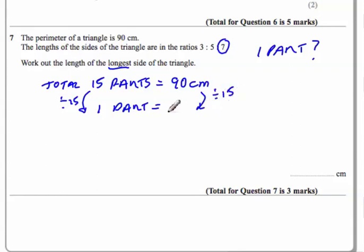And we get 6, so 6 centimeters. So one part is 6 centimeters. So from then on, we just have to work out what 7 parts is. 6 times 7, which is 42 centimeters. And you've got 3 marks for that one.